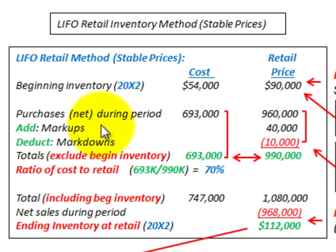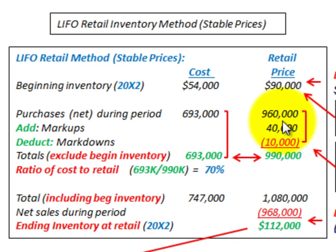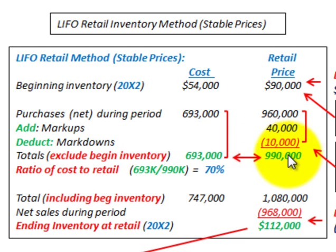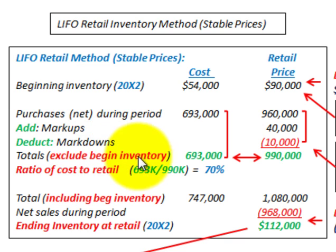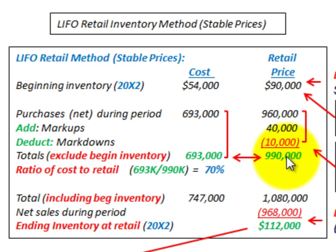We had our purchases for the period, and then we add any markups — included in our retail price — and deduct any markdowns, which reduce our retail price. Summing purchases plus markups less markdowns gives us totals for inventory at cost and at retail price, but this excludes the beginning inventory. We have a cost of $693,000 and a retail price of $990,000.